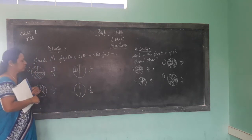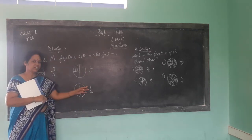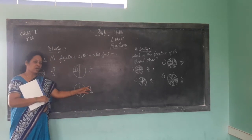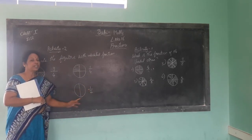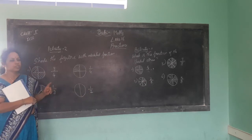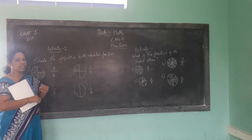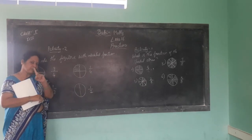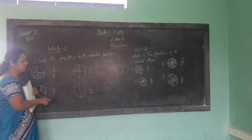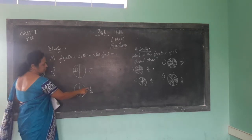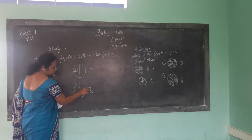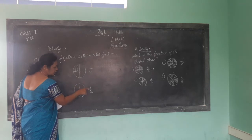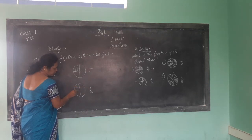Here what we have is 1 by 2. How much do you shade? How many parts do you shade? Only 1 part. Upper number is the numerator — always shade the numerator. How much is there? 1 — so you shade 1 part.